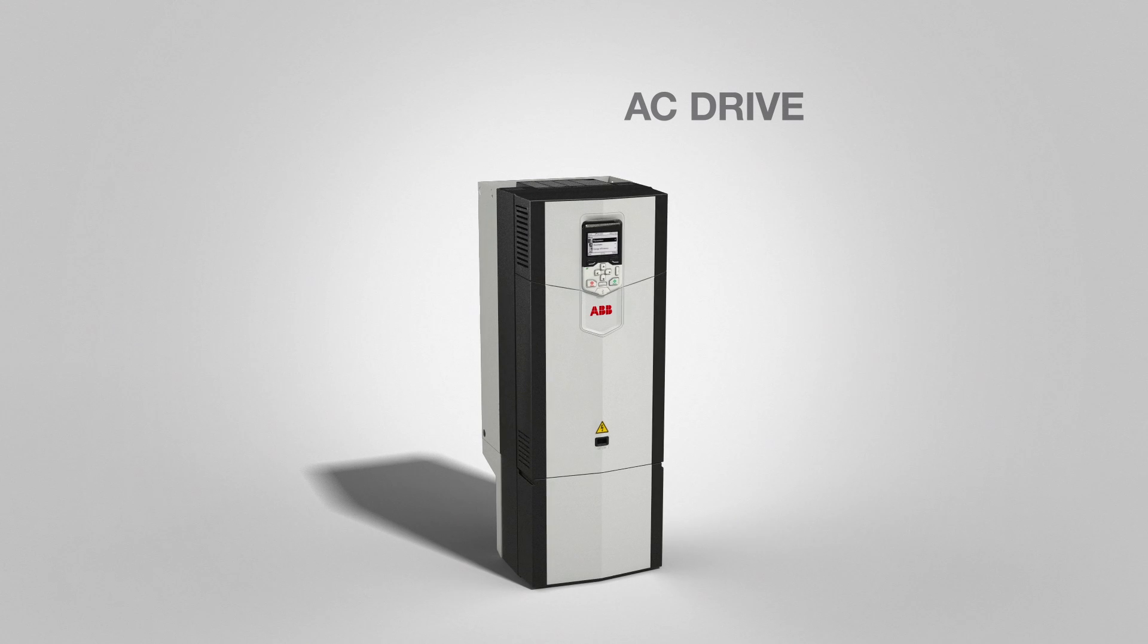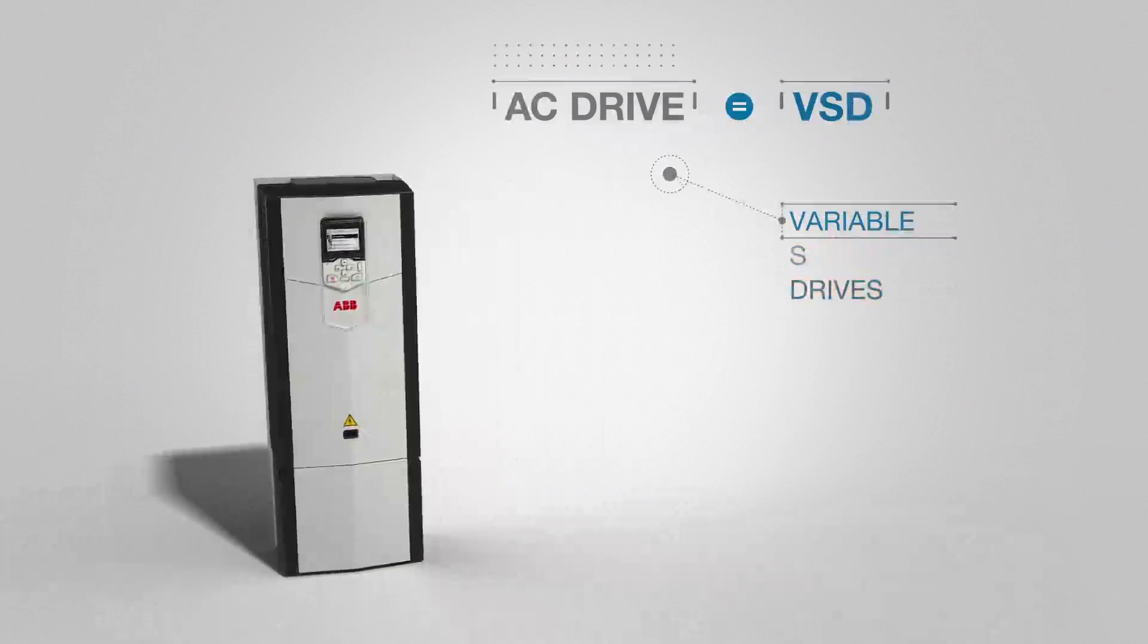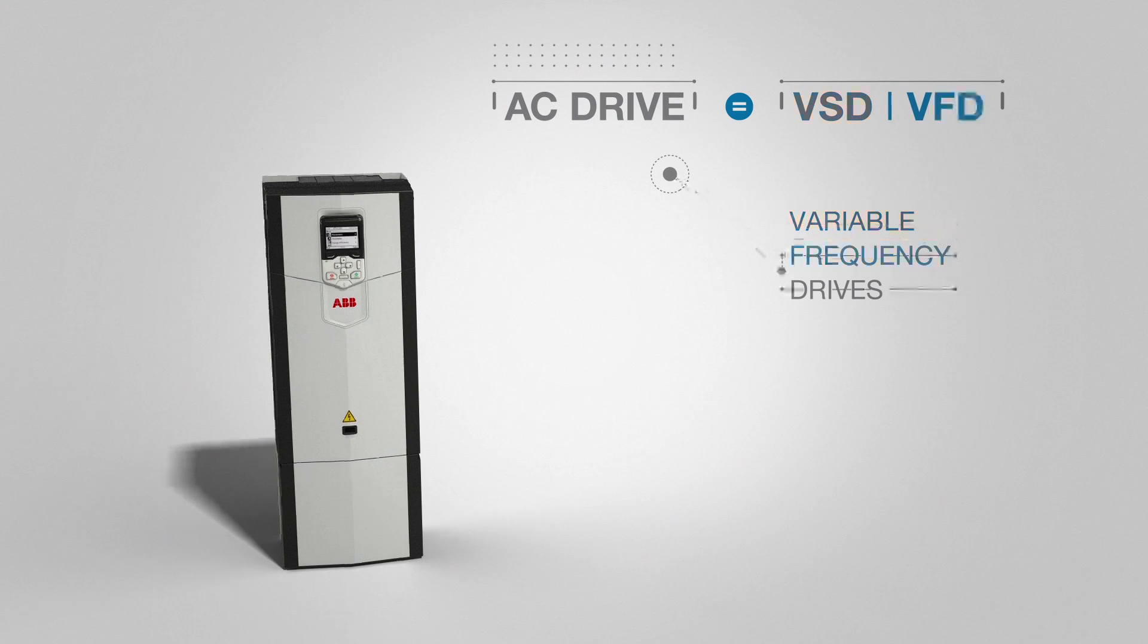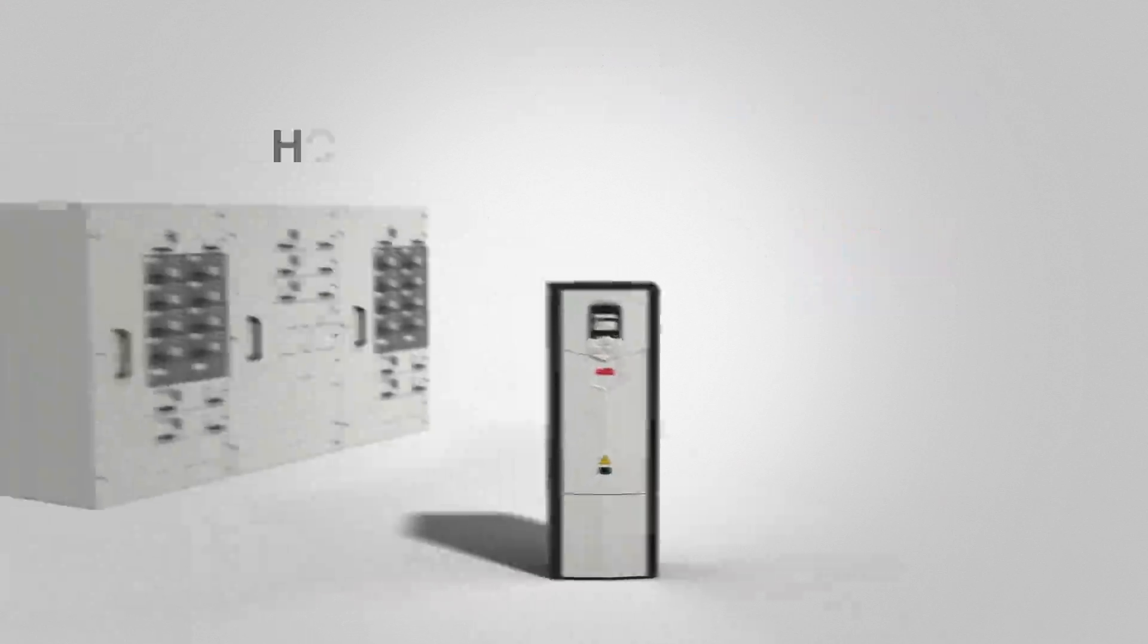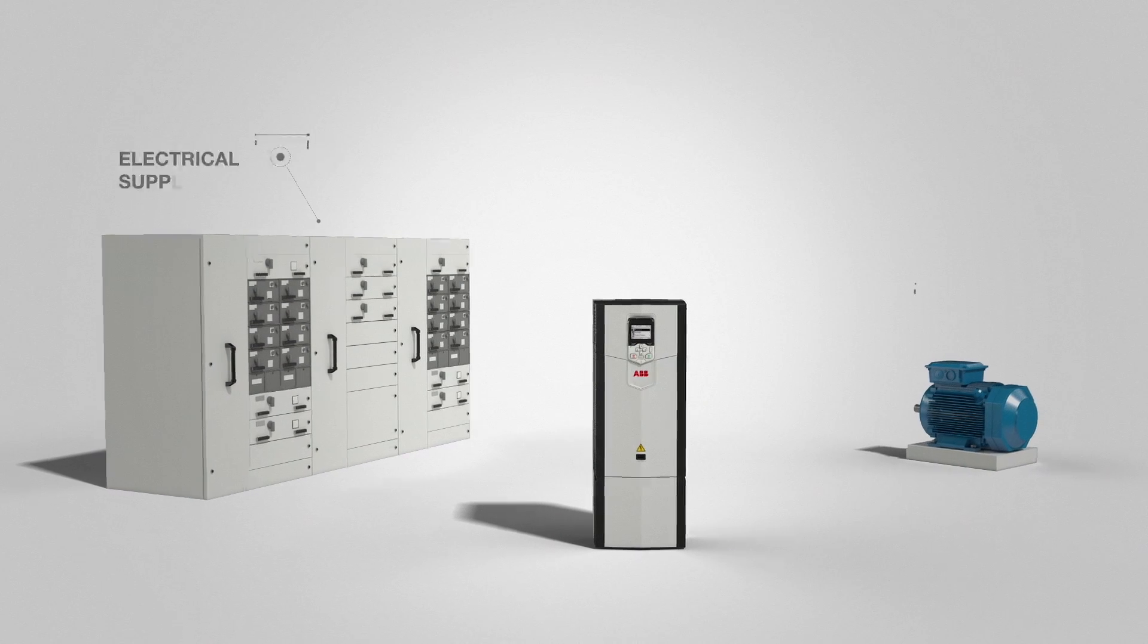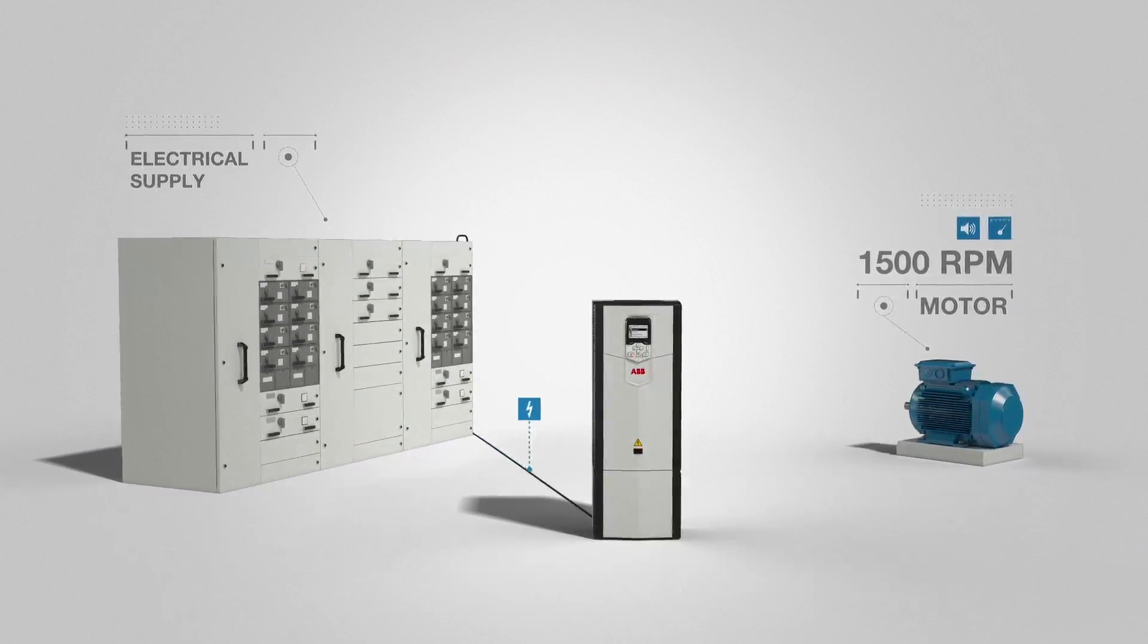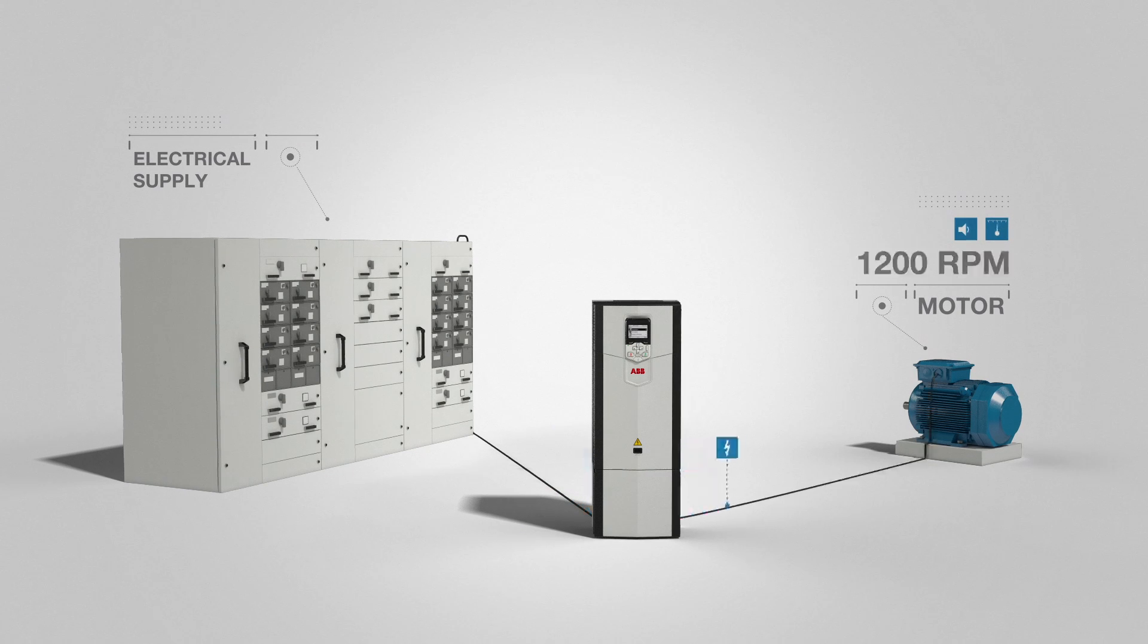Our AC drives are sometimes called variable speed drives or variable frequency drives. But how do AC drives work? Our drives sit between the electrical supply and the motor. Power from the electrical supply goes into the drive, and the drive then regulates the power that is fed to the motor.